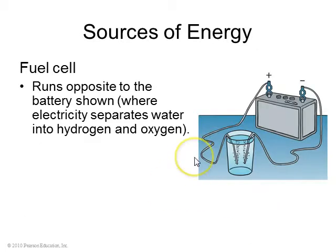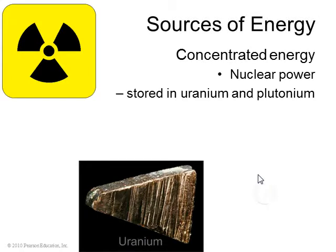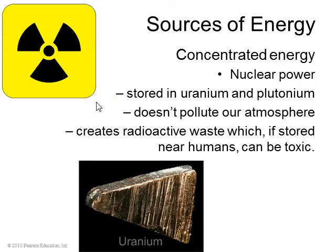Now, a fuel cell uses hydrogen and oxygen to combine to make water and energy. And this is just the opposite process of when you run electricity through water, you can create bubbles of hydrogen and oxygen. If you reverse that process, you can create energy that way. There's also nuclear energy, which uses uranium or plutonium, and again generates heat, usually to turn a turbine. The advantage of nuclear energy is that it doesn't pollute our atmosphere, but the disadvantage is that it creates radioactive waste, which, if you store it near humans, can be toxic.